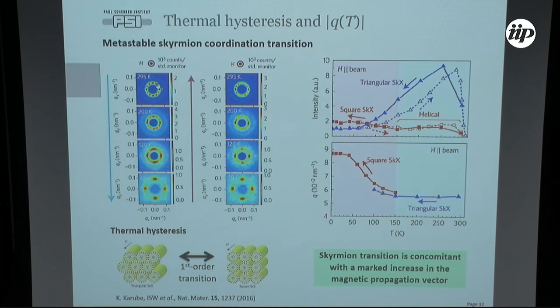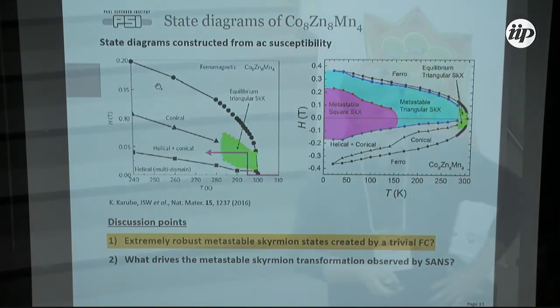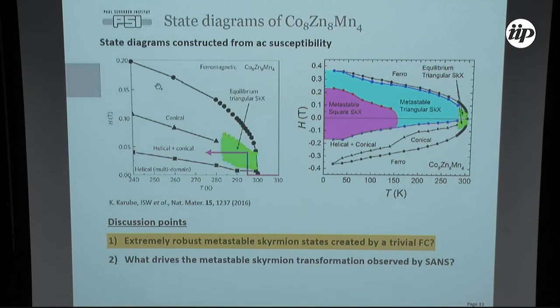The characteristic propagation vector as a function of temperature also varies markedly on cooling and transforms strongly through the transformation. In the last few minutes, I will discuss two main discussion points raised by our experiments: first, the existence of extremely robust metastable skyrmion states achieved by such trivial field cooling, and second, the metastable skyrmion transformation.